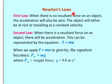Newton's laws. There are three laws, but we'll just look at the first two. First law says, when there is no resultant force on an object, the acceleration of the object will be zero. The object will either be at rest, stationary, or traveling at a constant velocity.